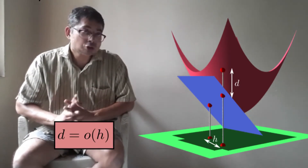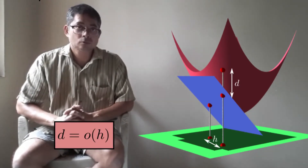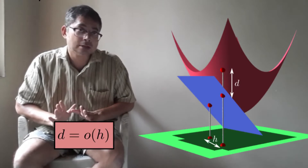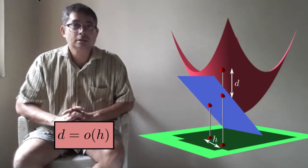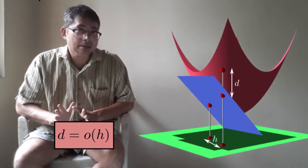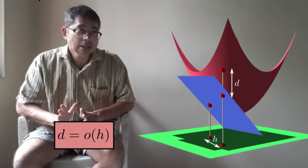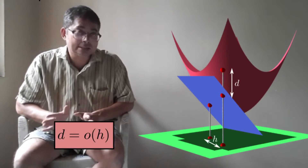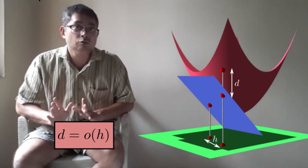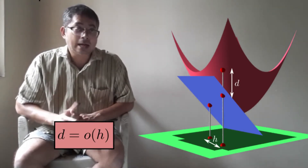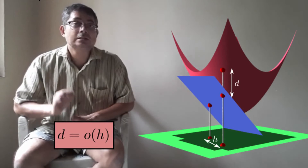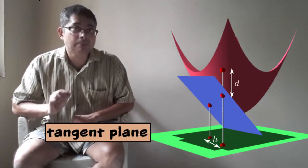Now one may show — though we are not going to show that in this class — that such a plane, if one exists, must be unique. And this plane is called the tangent plane.